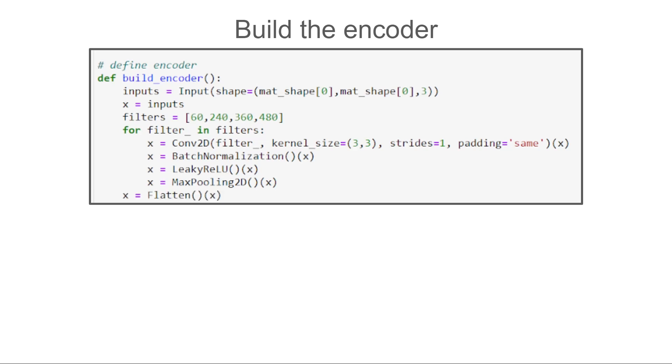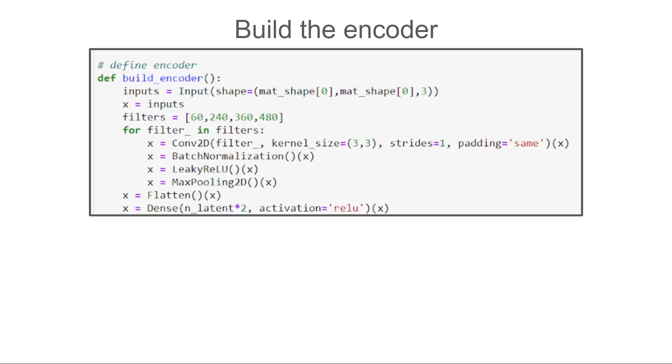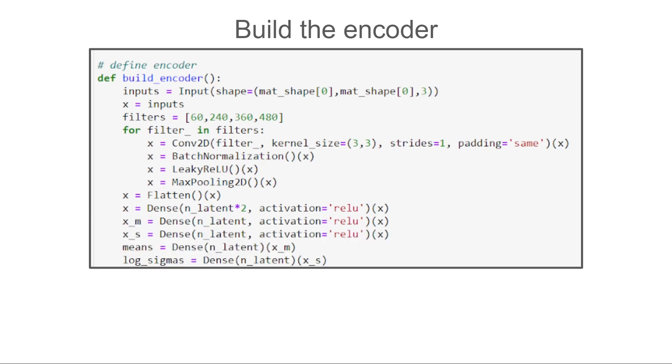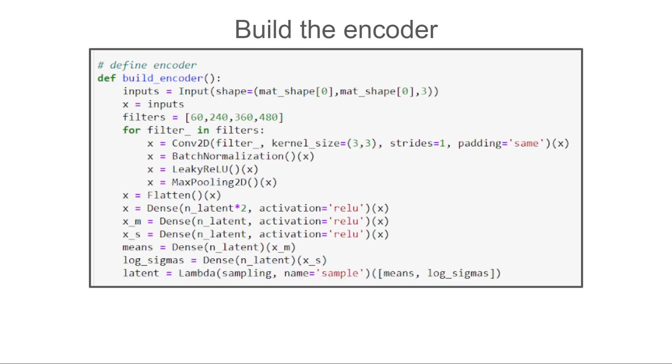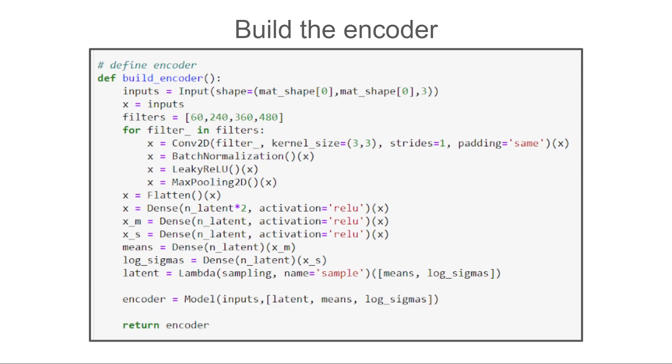Then comes the interesting part. We flatten the results of the last max pooling layer and pass the information to a dense layer. From there we split into two dense layers. One will be used for the means vector and the other for the variance vector. The lambda command allows us to use functions as layers. We will soon see the sampling layer implementation. Lastly, we assemble the encoder with the model command. The second argument is a list of all of the outputs. We output not only the latent vector here but also the means and variances. We need them for the loss function later.